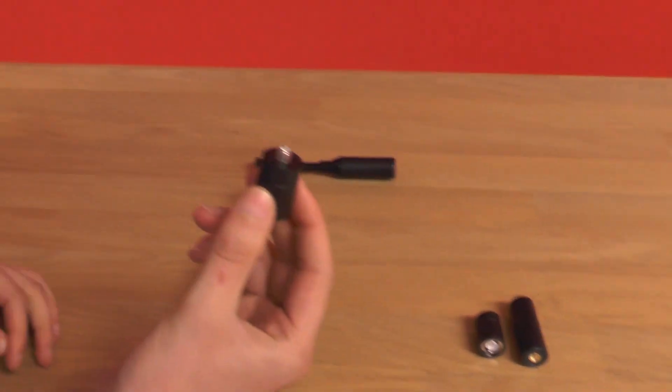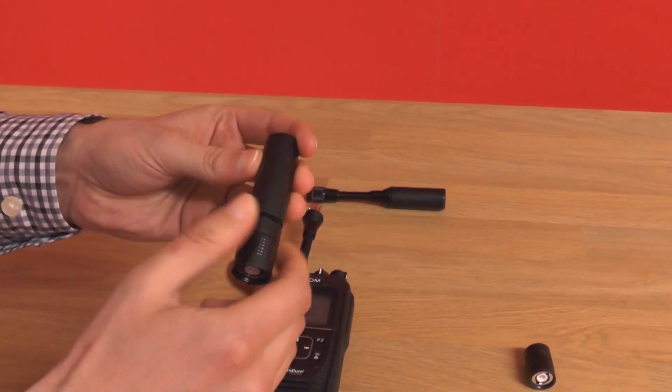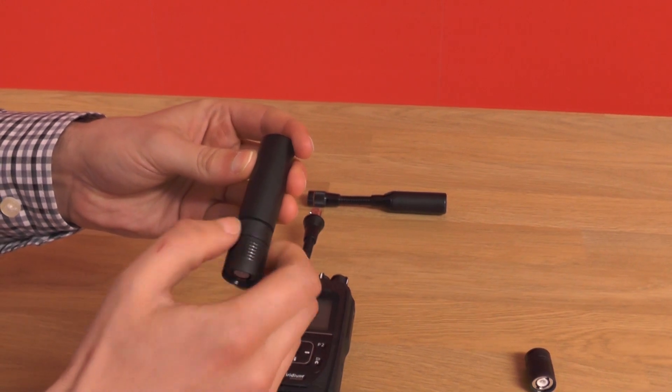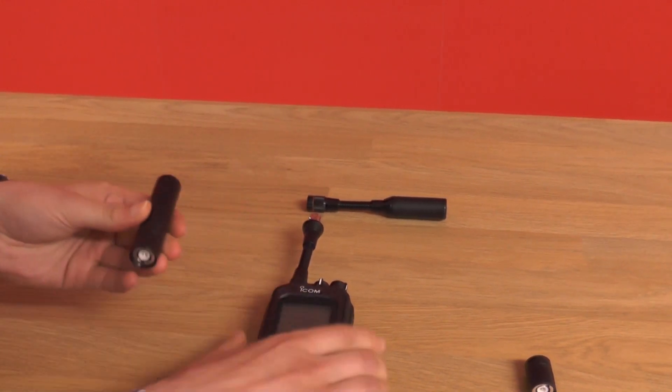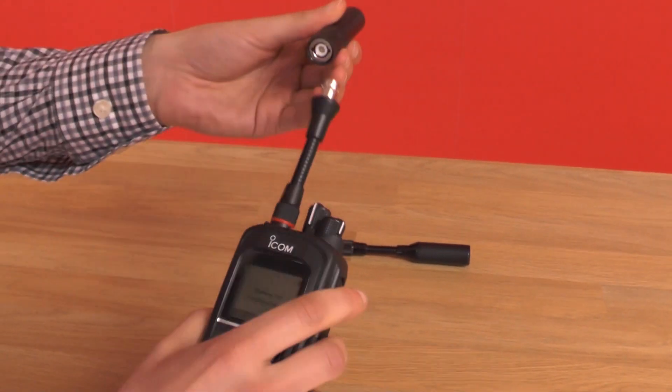You take one of the connectors and attach the end of the antenna onto there. And you now connect the end of the antenna onto the stem.